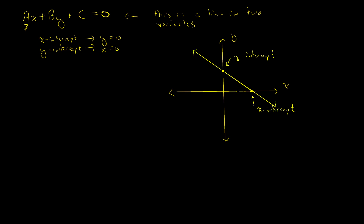These are easy points to work with. What's nice about having things equal zero is they're easy to substitute into equations. So let's look at an example: 3x plus 2y equals 6, or equivalently 3x plus 2y minus 6 equals zero. We want to find the intercepts.